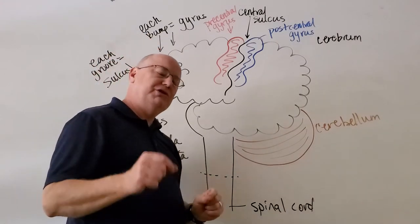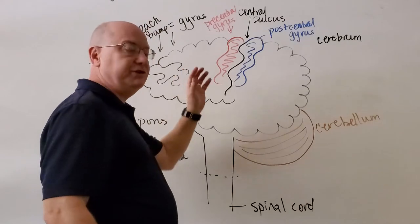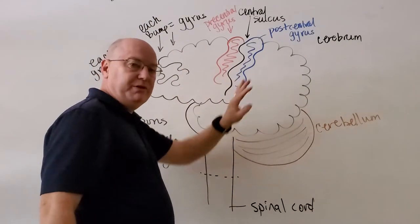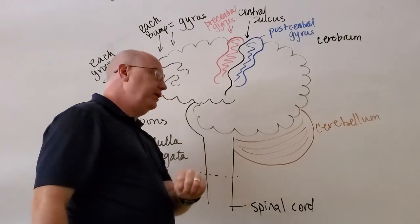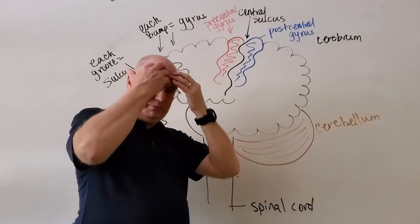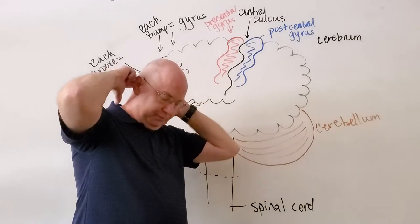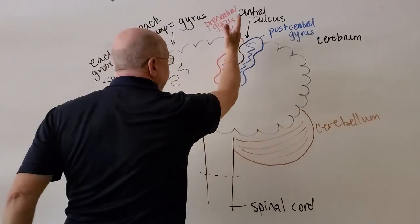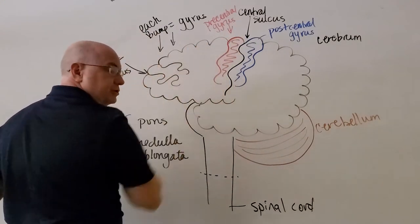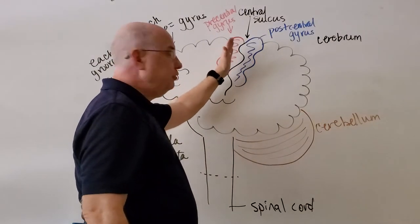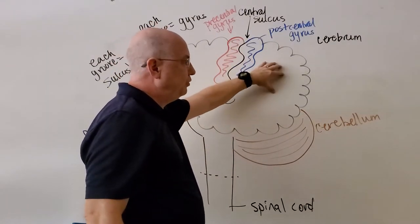Another reason the central sulcus is important is because it is the division between two lobes. The surface of the cerebrum shows us four of the lobes of the brain. And the four lobes that we're going to see here are named for the bones that cover them. Frontal bone, parietal bone, occipital bone, and temporal bone. So, all of the area from the central sulcus forward is called the frontal lobe. The central sulcus is the border between the frontal lobe and what we call the parietal lobe.